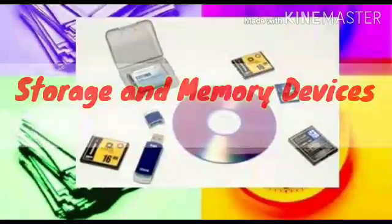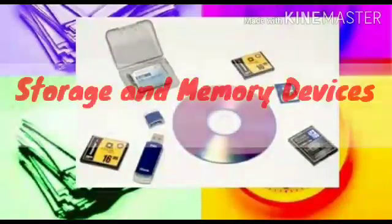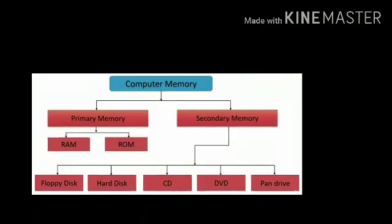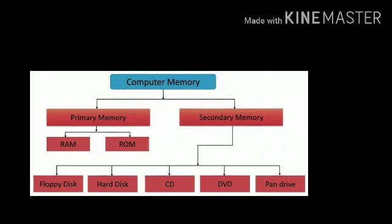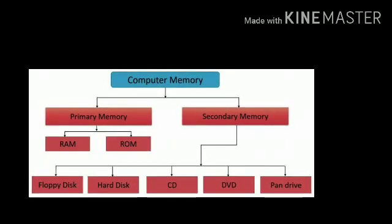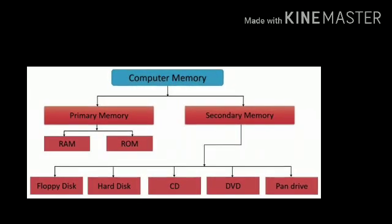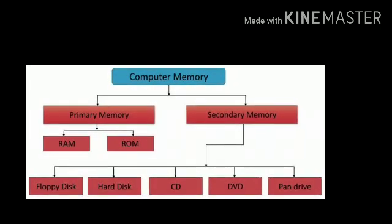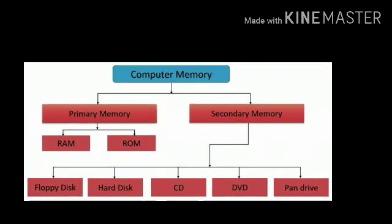Today we will continue with this chapter. I have already told you about data, information and memory units. Today I will tell you about computer memory. What is computer memory? As you know, we as humans have brains to store things. In the same way, a computer stores its information in its memory. The memory of the computer is classified into two parts.